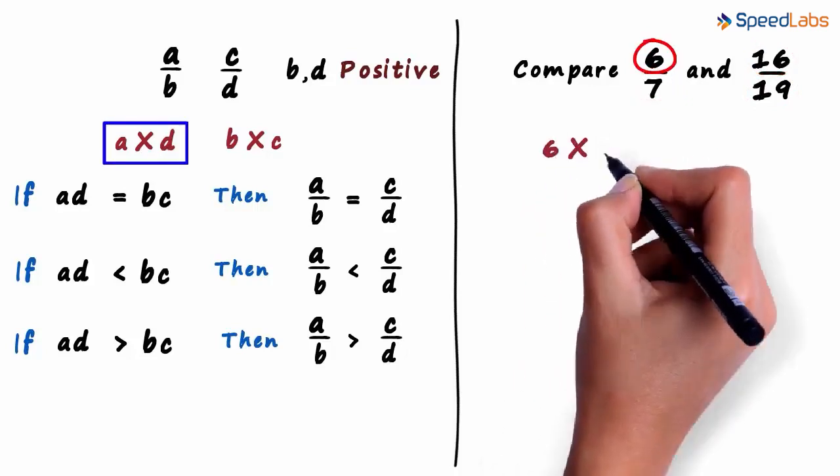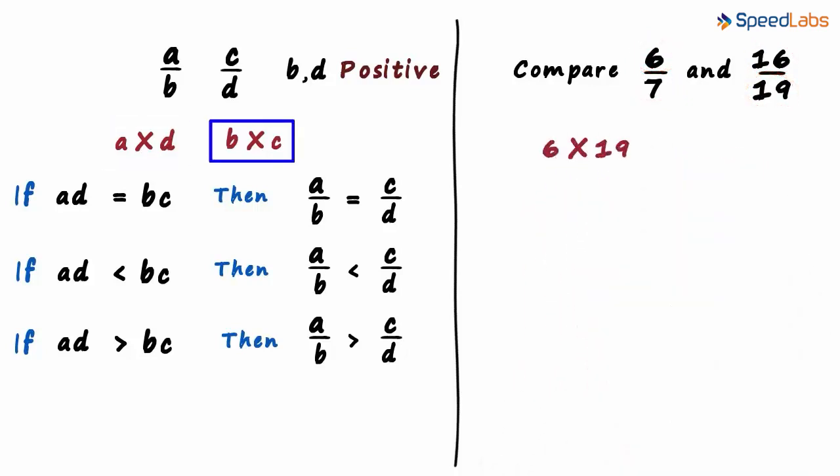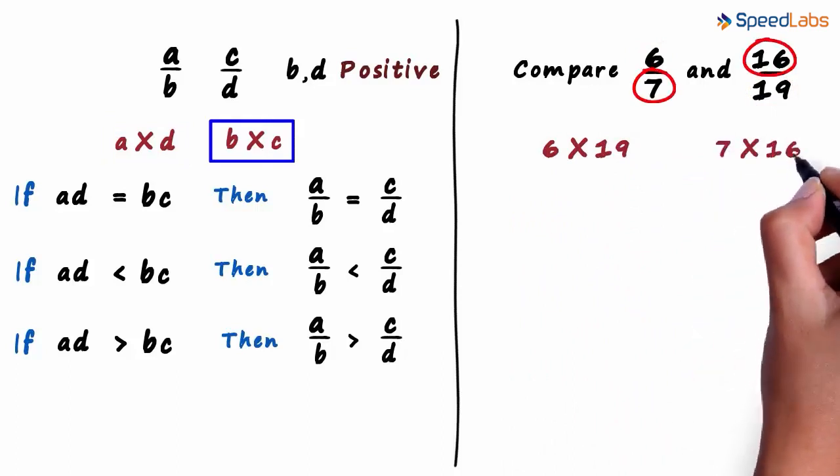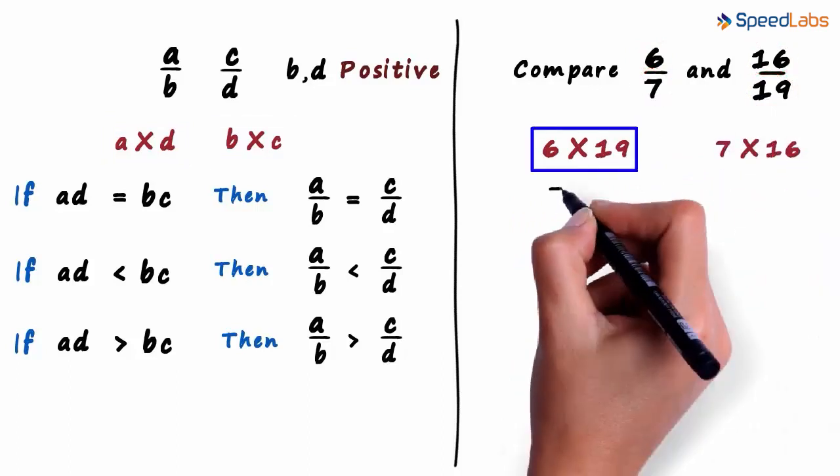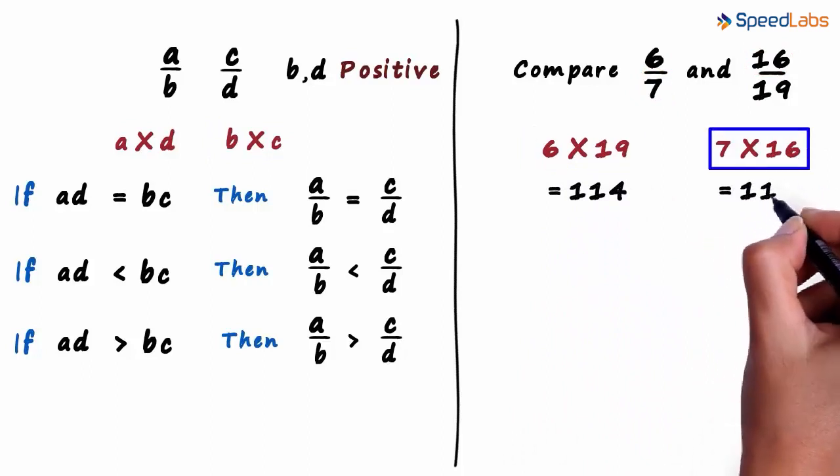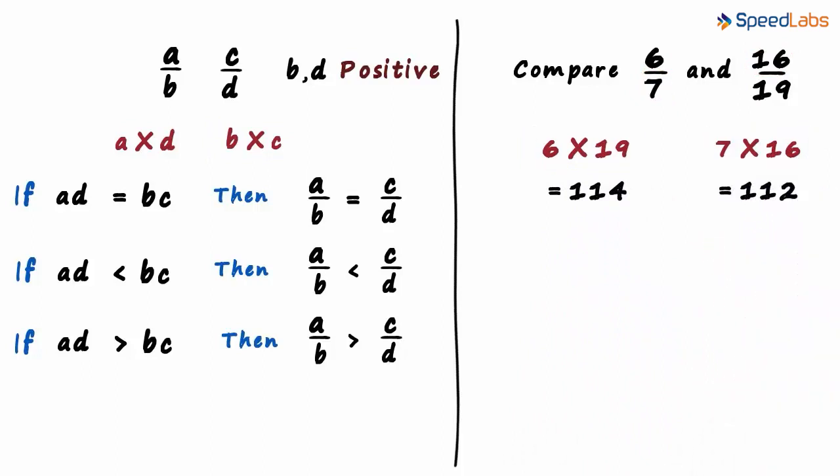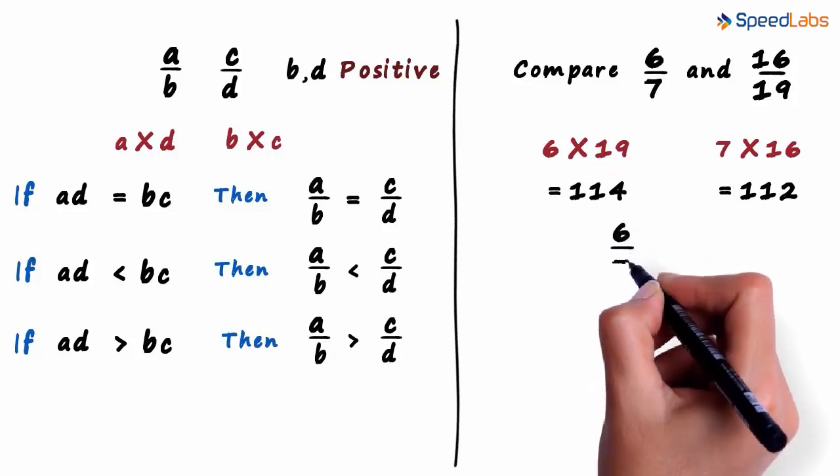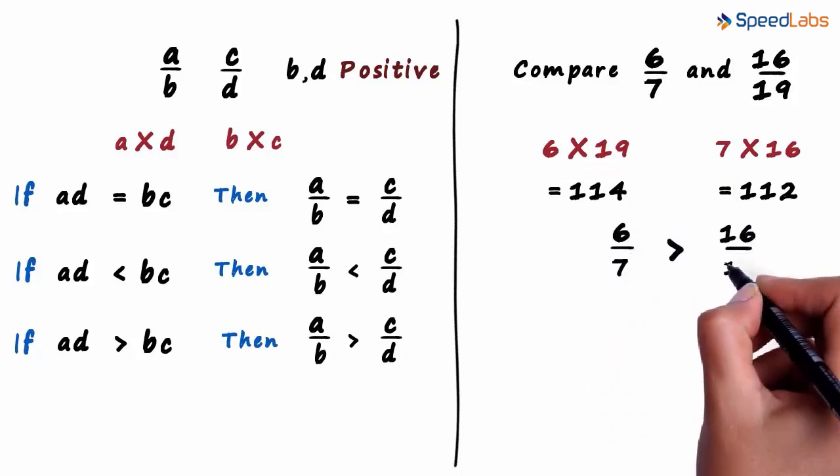AD in this case will be 6 times 19, and BC will be 7 times 16. 6 times 19 is 114, and 7 times 16 is 112. As we can see that 114 is greater than 112, we can be sure that 6 by 7 is greater than 16 by 19.